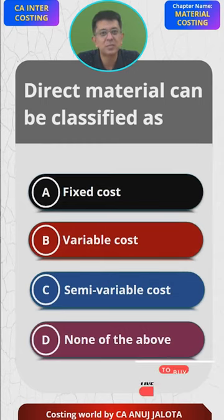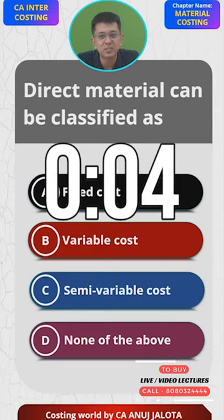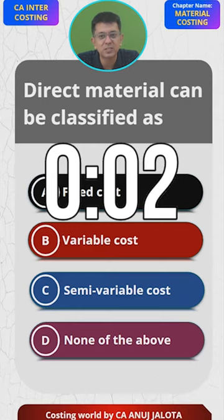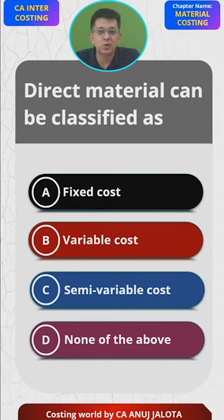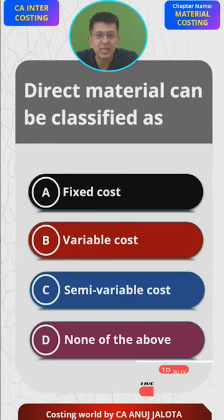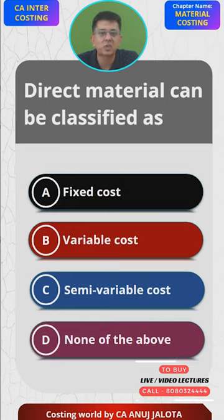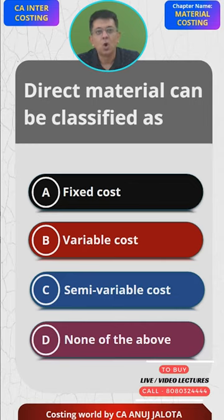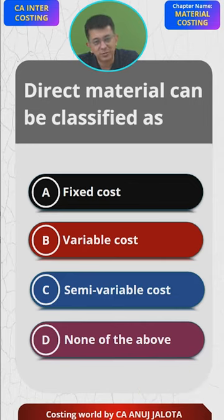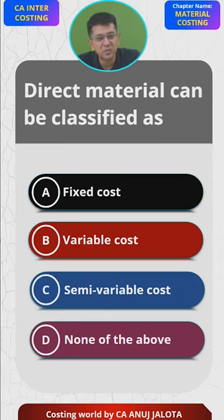Think of the correct answer — it's supposed to be an easy one. Direct material obviously is a direct cost. Direct cost itself means that it is directly incurred for making each and every unit. So the answer should be very obvious: it is variable cost. Obviously it cannot be fixed cost.